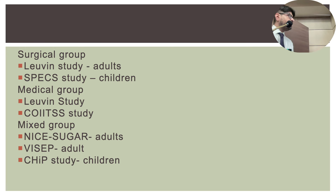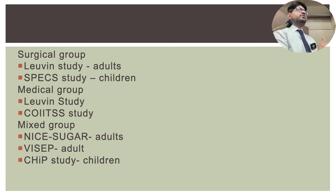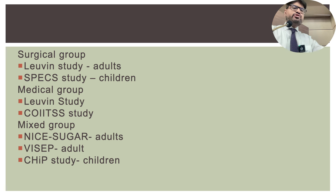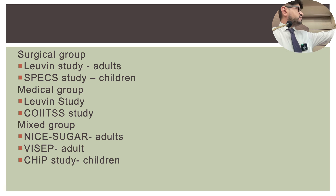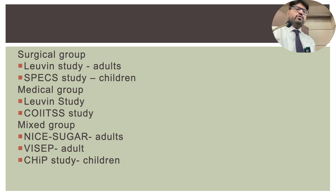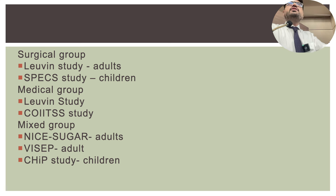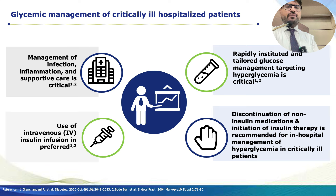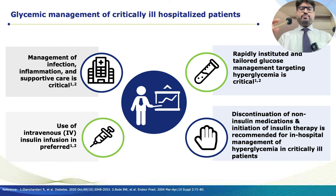To summarize the clinical evidence: in the surgical group, studies include Leuven and SPECS (children); in the medical group, Leuven and COIITSS; and NICE-SUGAR covered both adults in mixed ICUs while CHIPS studied children. The current guideline across medical and surgical ICU is to keep blood sugar between 140-180, with up to 200 being reasonably acceptable.